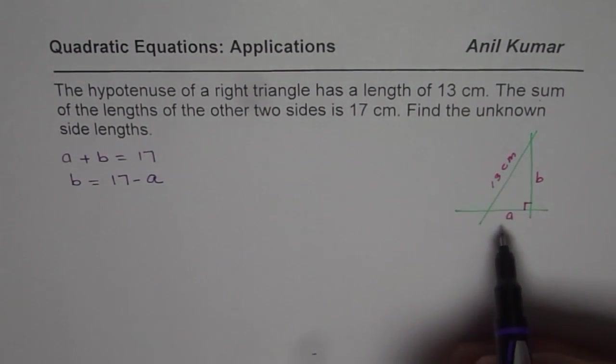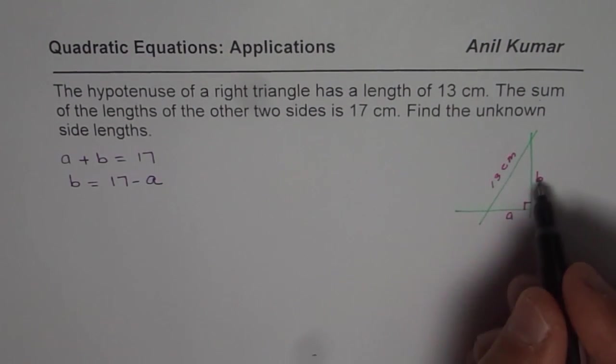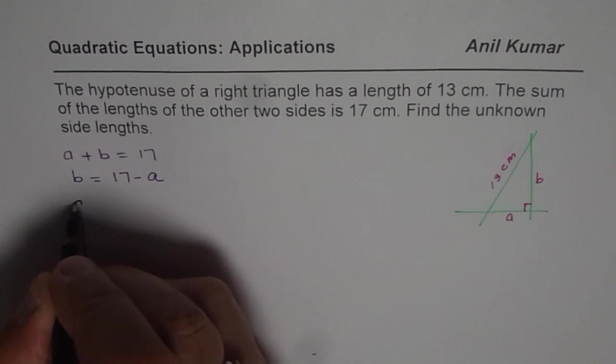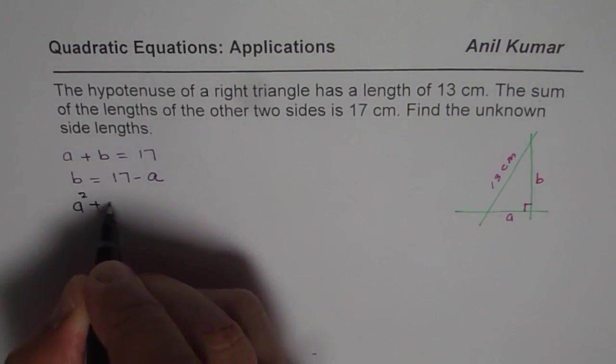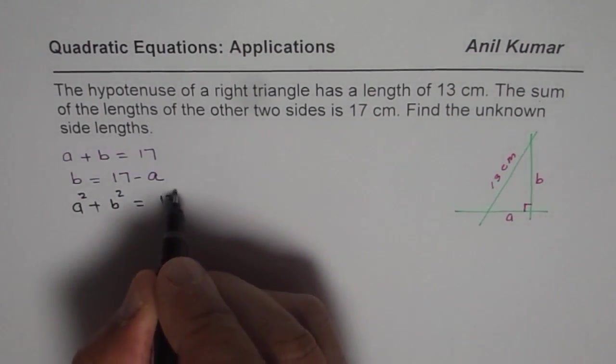These three sides of a right triangle can be related with the help of Pythagorean theorem. So Pythagorean theorem is A² + B² = C². So we can write this as A² + B² equals to C is 13, so we can write 13².